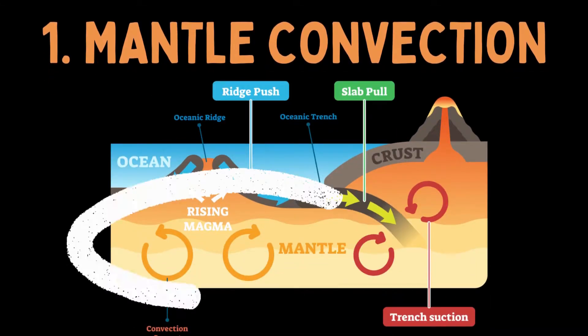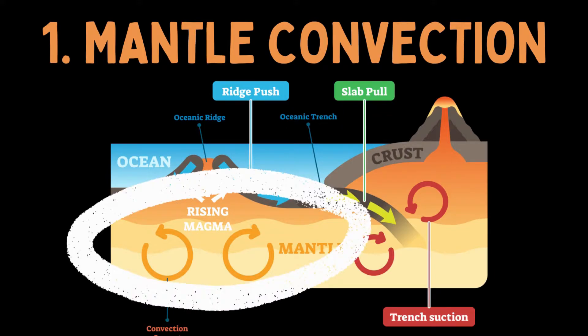The first is the conveyor belt idea, or mantle convection, where plates are passively riding along a convecting mantle. The idea is that we have plates which are made up of the crust and the uppermost part of the mantle, called the lithosphere. They are rigid, but the layer just below the lithosphere, called the asthenosphere, is plastic and mobile, which means that it has the ability to flow — and flow like a very slow moving fluid.